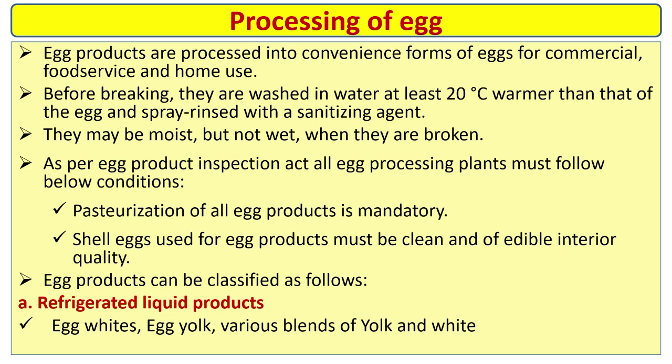Processing of egg: egg products are processed into convenience forms for commercial food service and home use. Before breaking, they are washed in water at least 20 degrees Celsius warmer than the egg and spray rinsed with a sanitation agent. As per the Egg Product Inspection Act, all egg processing plants must follow these conditions. Pasteurization of all egg products is mandatory.